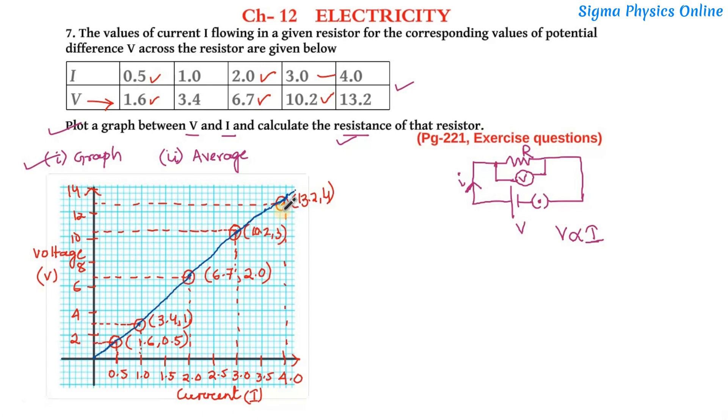So this is the graph and if we join these points we get a straight line. The line which we get, that represents the resistance of the wire.